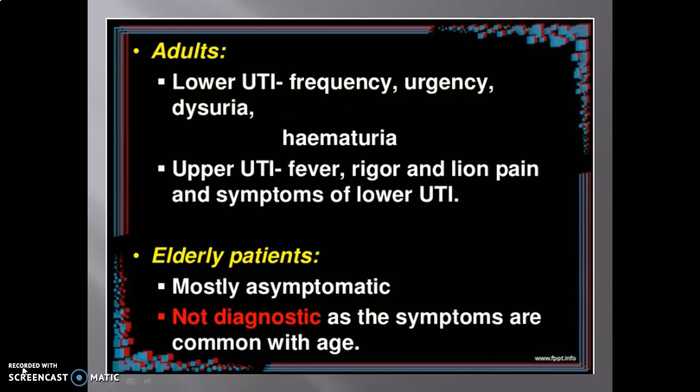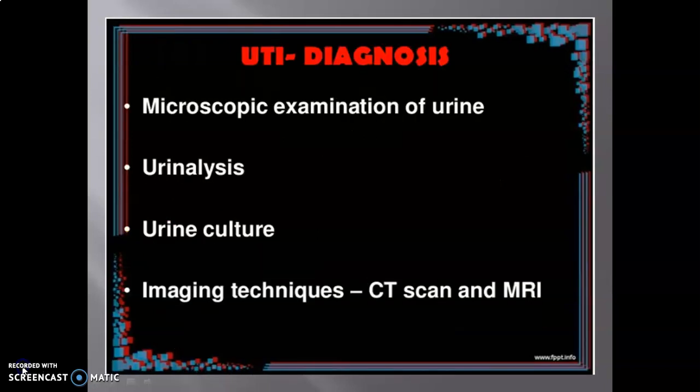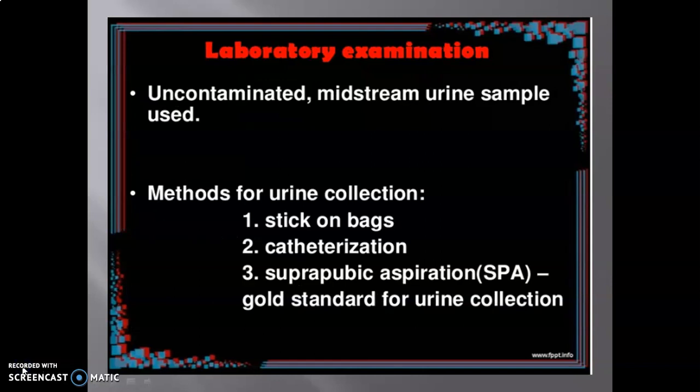In elderly patients, UTI is mostly asymptomatic and often not diagnosed, as symptoms overlap with those common at that age. Diagnosis of UTI involves microscopic examination of urine, urinalysis, urine culture, and imaging techniques like CT scan and MRI. In laboratory examination, an uncontaminated midstream urine sample is used. Methods for urine collection include stick-on bag, catheterization, and suprapubic aspiration — the gold standard.